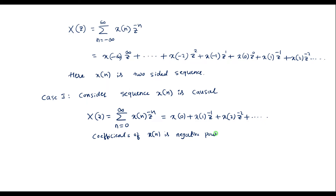For a causal sequence the ROC will always be greater than some constant, and the coefficients of X(n) correspond to negative powers of Z. One should remember this.